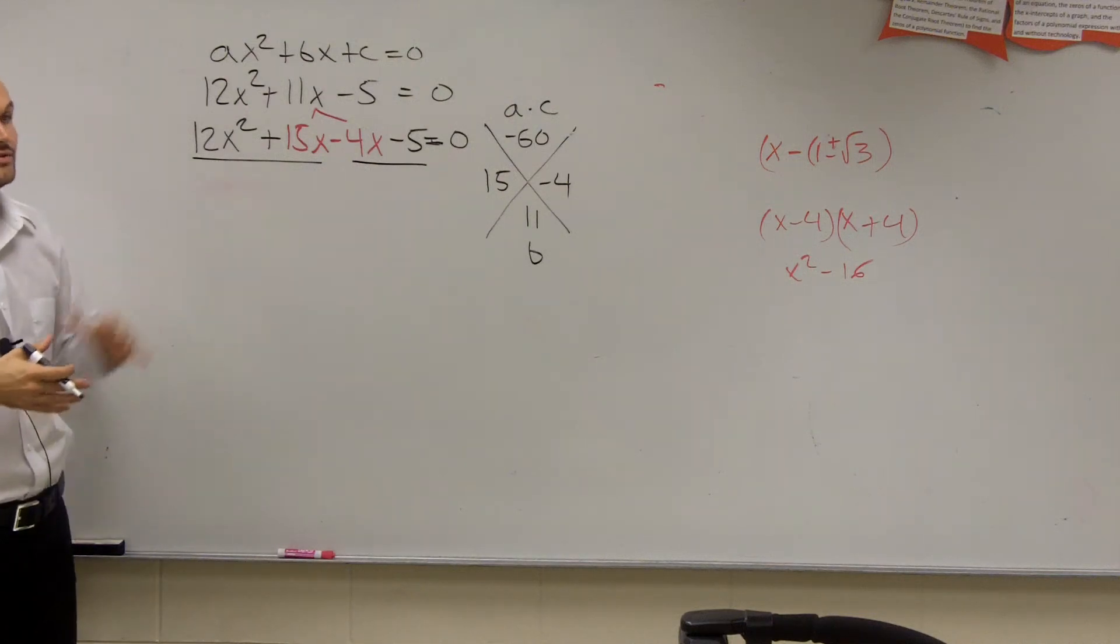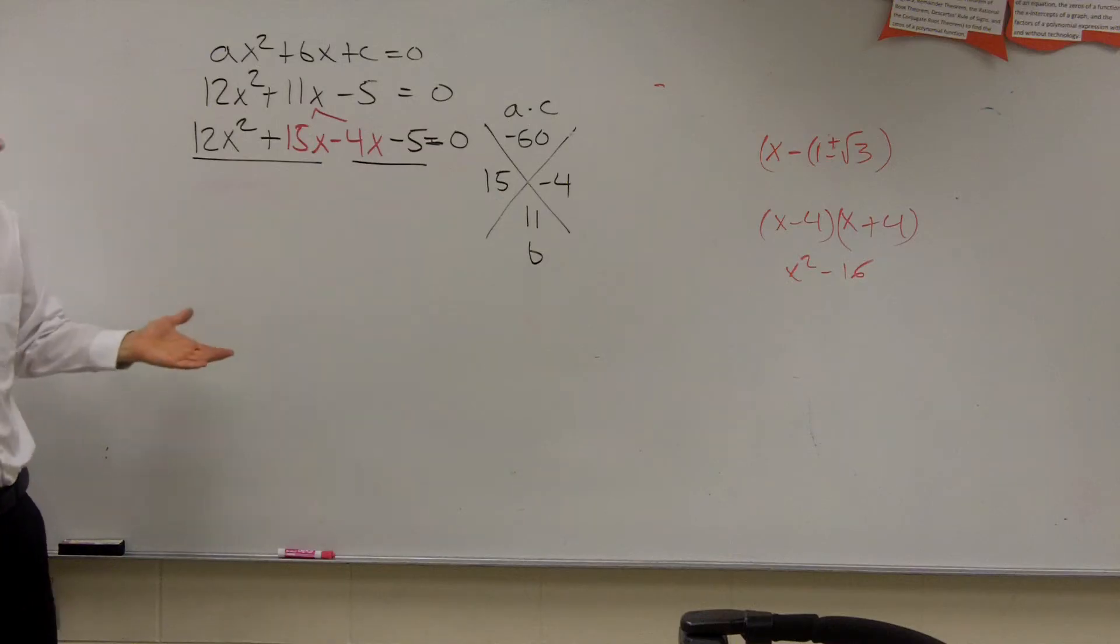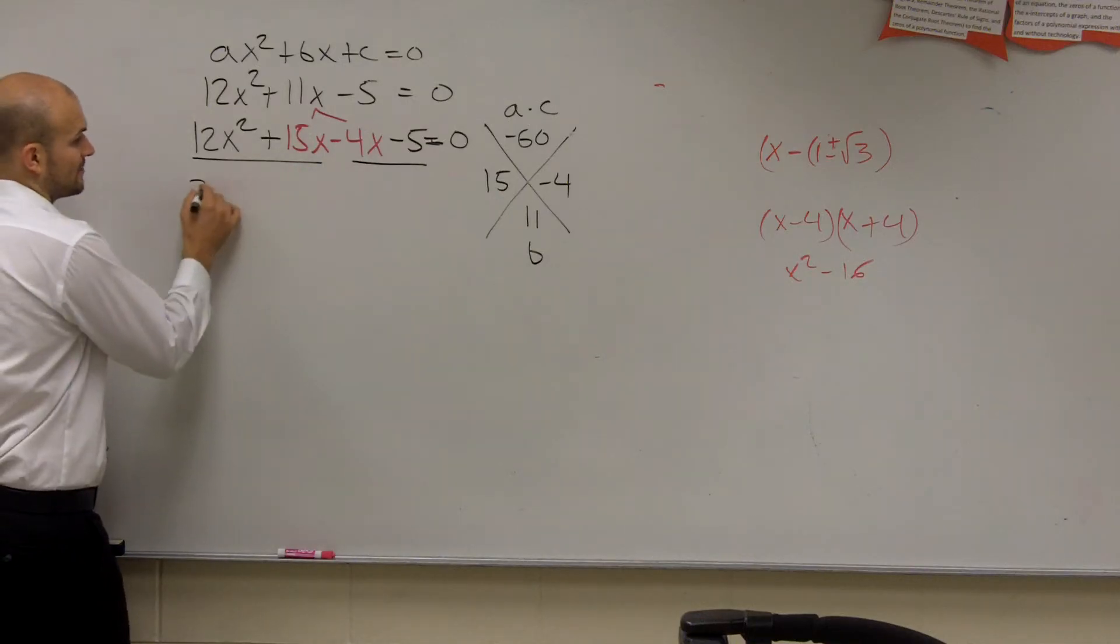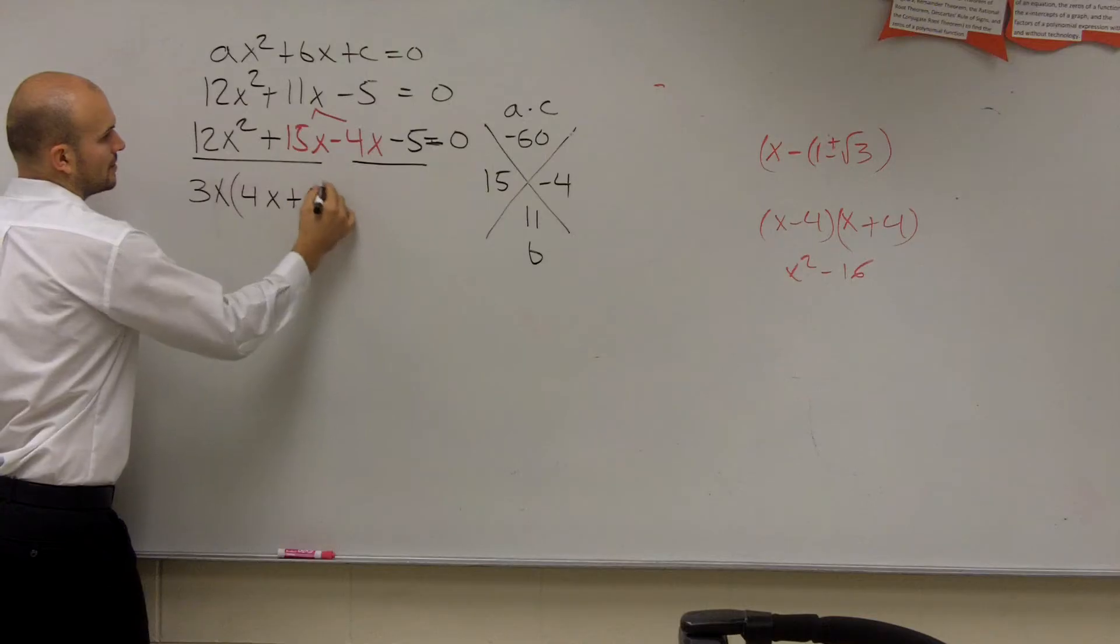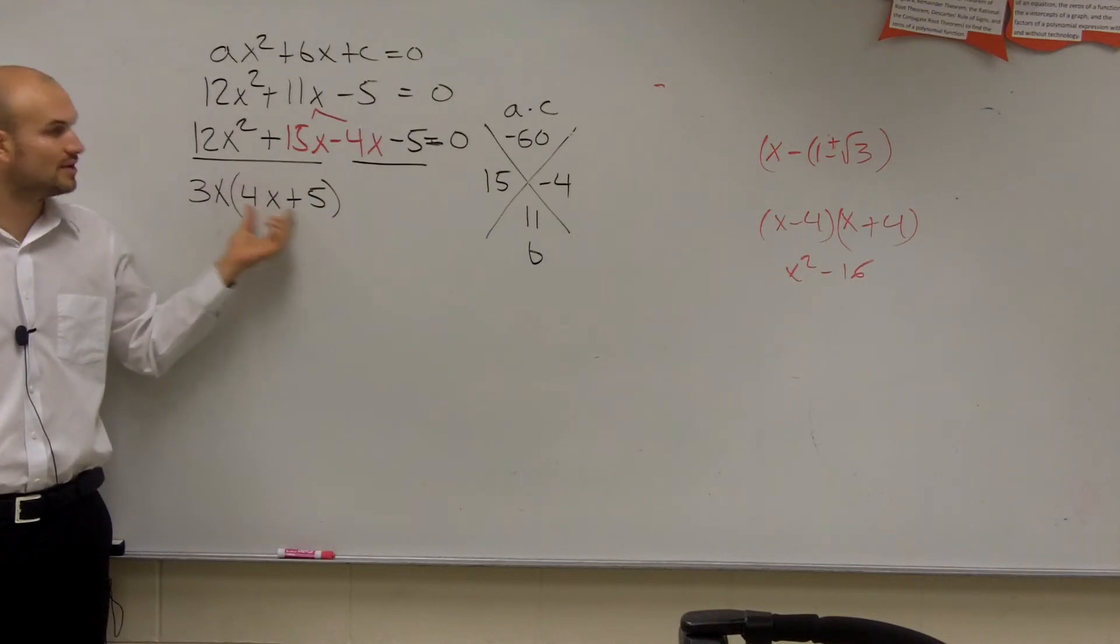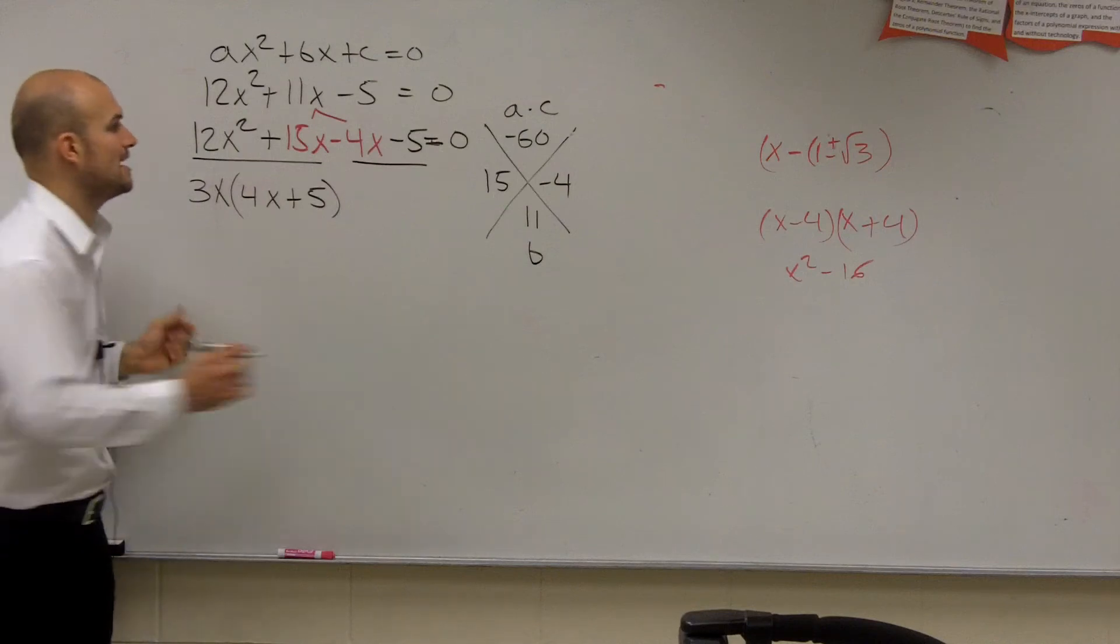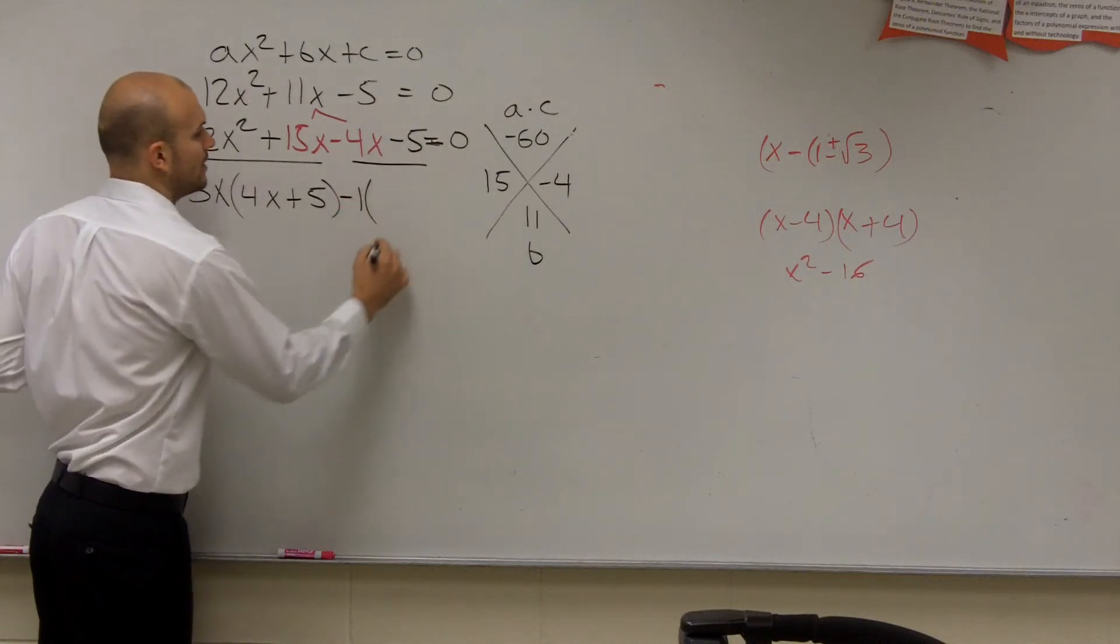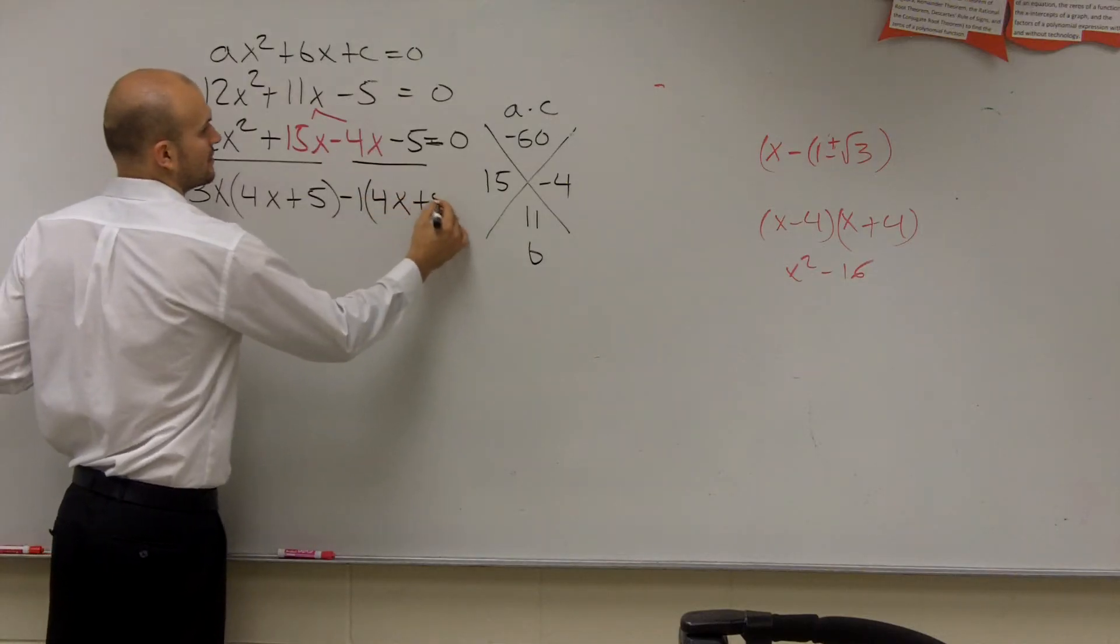So I look over here and say, what do these two terms share in common? So you look at 12x squared and 15x, and you can say, what can we both factor out of both of them? You can say a 3x. So if I factor out a 3x, I'm left with 4x plus 5. Now, I need to get another 4x plus 5 here. So I'm almost there. I have a negative 4x minus 5. So to get that to be a 4x plus 5, I'm going to want to factor out a negative 1. By factoring out a negative 1, I now have a positive 4x plus 5.